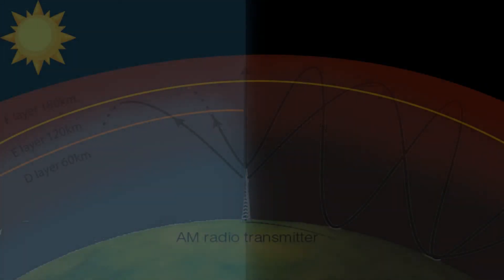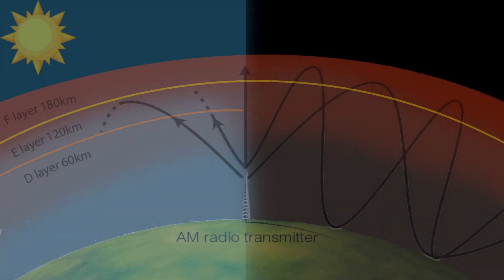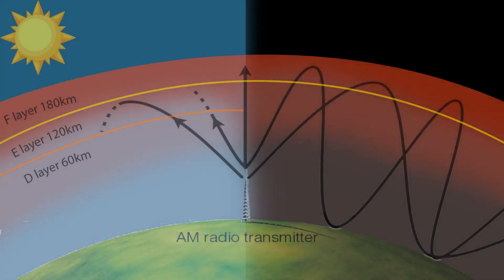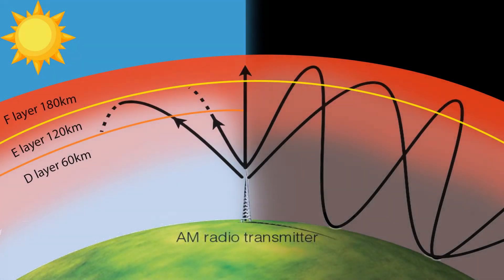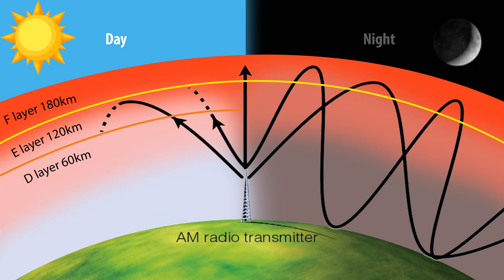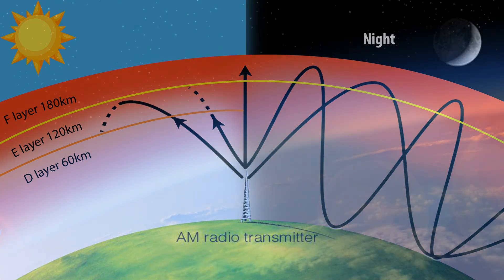Let's move on to radio wave propagation. AM radio waves are long enough to interfere with ions in the sun-charged D layer. But at night the D layer is weak and the AM signal propagates further, requiring stations to use less power.